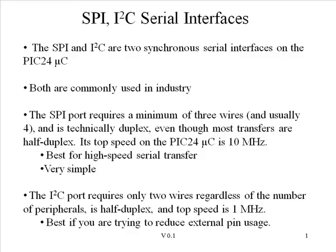The I2C interface is half duplex and lower speed, with a maximum of 1 megahertz. However, the big plus is that it only uses two wires, in contrast to SPI, which uses three wires plus an additional wire for every component. Therefore, it is the best choice if you're trying to reduce external pin usage.